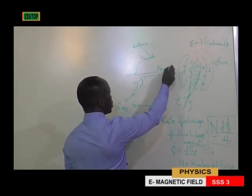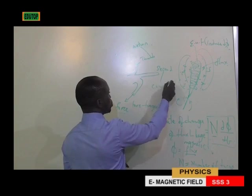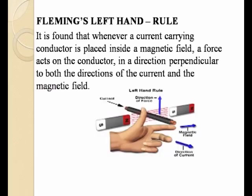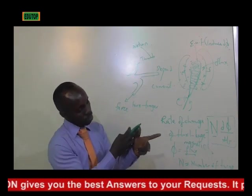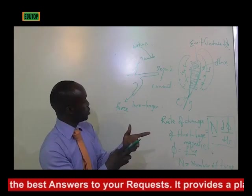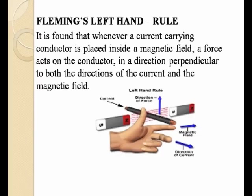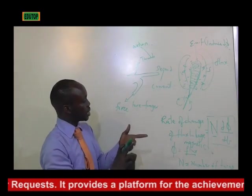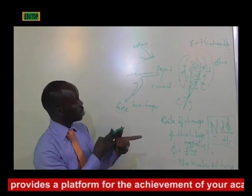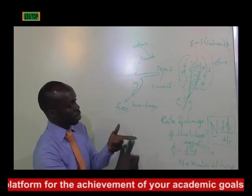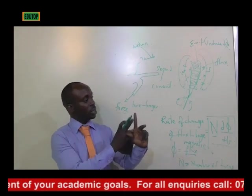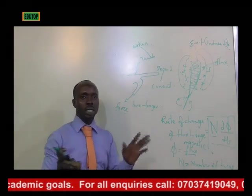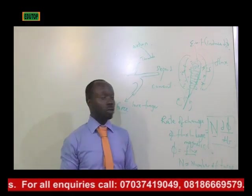The forefinger talks about the force, while your second finger talks about your current. So if I place my hand this way and the motion of the coil is going this way — obeying the thumb — and my forefinger is going this way, force will be generated this way, while your current will be generated this way. That is: thumb = motion, forefinger = magnetic field/force, second finger = current.